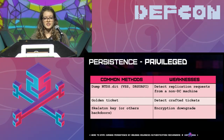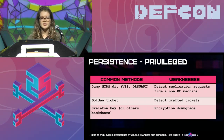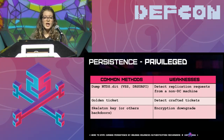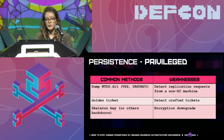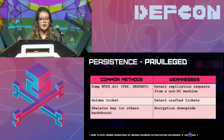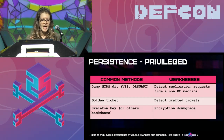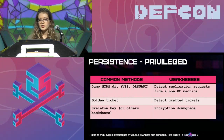Common persistence methods include dumping the ntds.dit file from Active Directory, which contains all domain secrets and user hashes. There's also the golden ticket attack — forging a TGT for an administrative account to request more service tickets. Additionally, the skeleton key or other backdoors can be left on the domain controller. Each has weaknesses: DRSUAPI replication requests from non-domain controllers can be detected via network traffic analysis, crafted tickets can be detected, and the skeleton key can be detected by encryption downgrade activity from the domain controller.